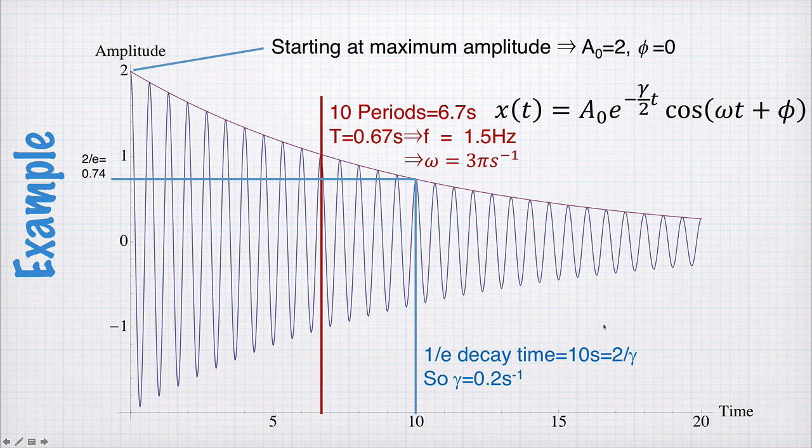So now we have everything. We know γ, we know A₀, we know ω, we know φ. So we can say that x as a function of time is 2 times e to the minus t divided by 10 times cos(3πt).